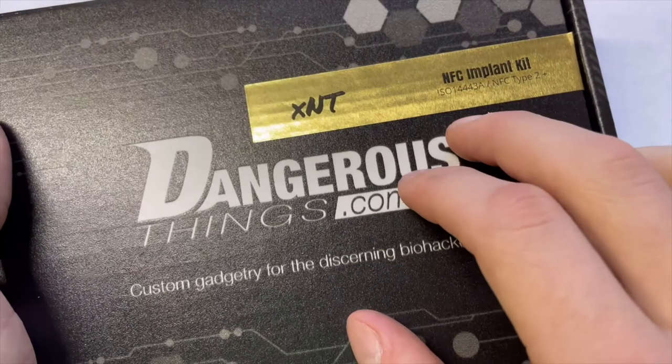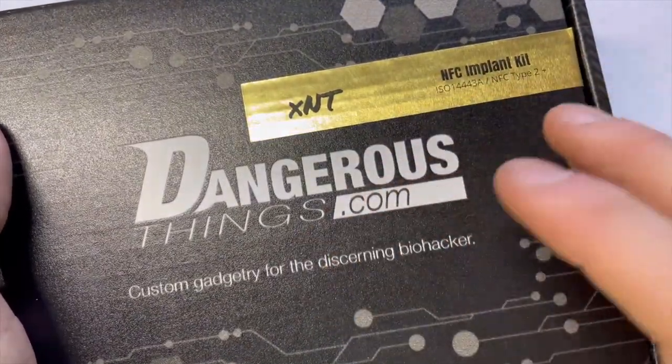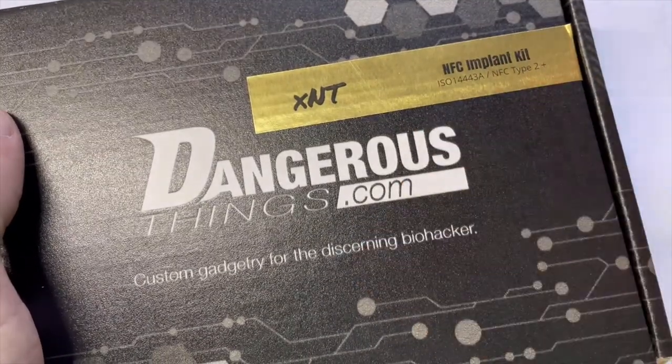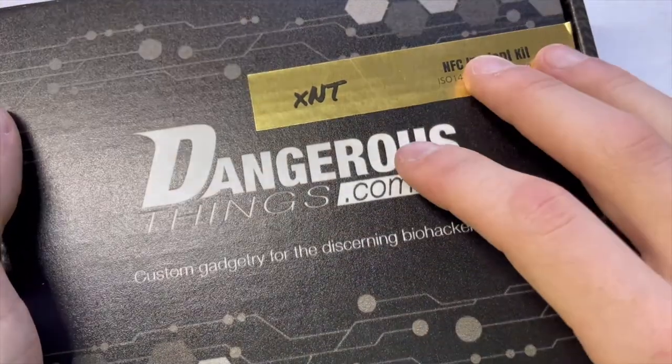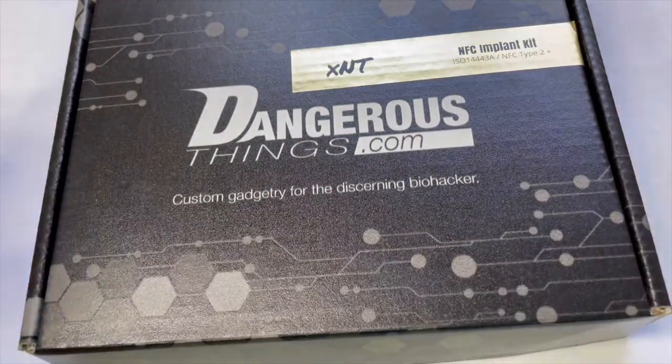But, the XNT, which is an NFC one, which operates at 13.56 MHz. Which, the NFC is enabled on most smartphones. So, hypothetically, if you wanted to, you could put your banking information, your credit card, practically anything, onto your hand, and then just bring it up to your cell phone to authenticate or transfer data. You can even put a YouTube link to it.